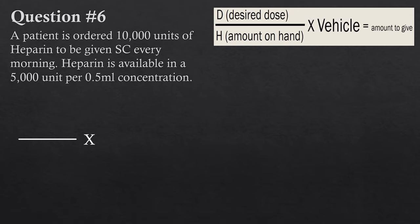Same as always — we start with the formula. Desired dose: a patient has ordered 10,000 units of heparin. Heparin is not measured in milligrams or grams — it's measured in units, similar to insulin. Don't get thrown off by that. So the desired dose is 10,000 units — we put that at the top. The amount on hand: heparin is available in 5,000 units per 0.5 mL, so the amount on hand is 5,000 units — that goes at the bottom.